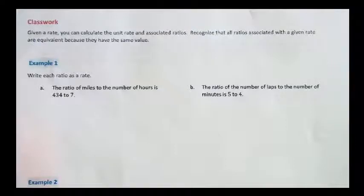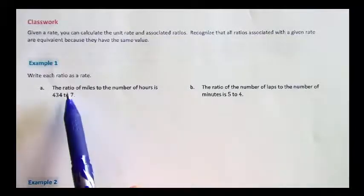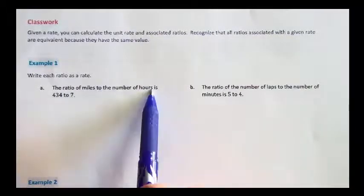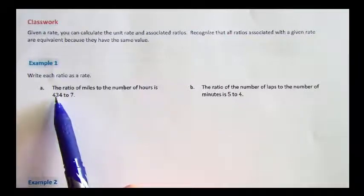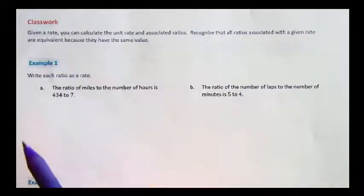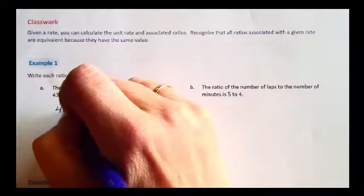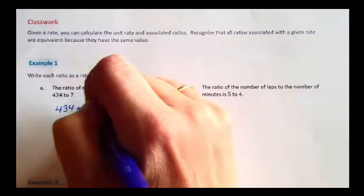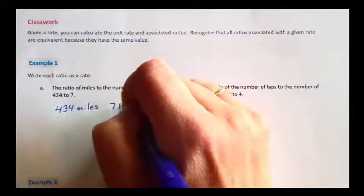Here's some more examples on how we can write each ratio as a rate and find the unit rate. The ratio of miles to the number of hours is 434 to 7. That means we have 434 miles and 7 hours.